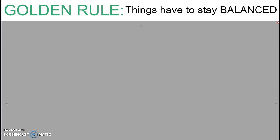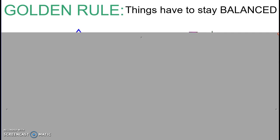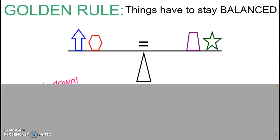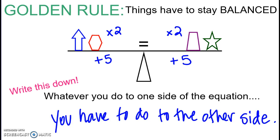As we solve equations, we have to follow the golden rule: things have to stay balanced. Think of an equation with an equal sign in the middle — if I add 5 to one side, the addition property of equality says I have to do the same thing to both sides to get an equivalent equation. Think of a scale: if you add weight to one side, you have to add the same amount to the other side for it to stay balanced. Whatever you do to one side of the equation, you have to do to the other side.